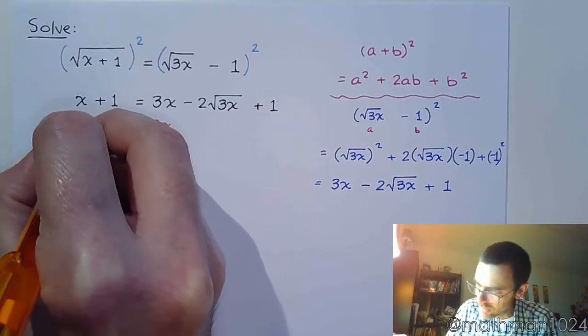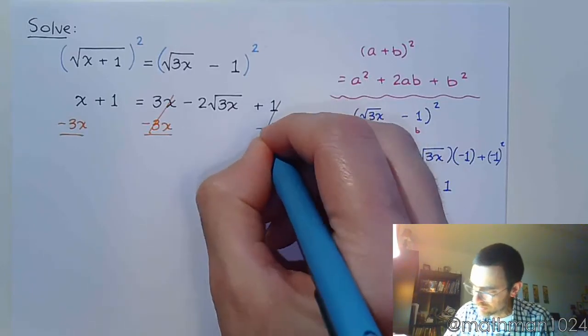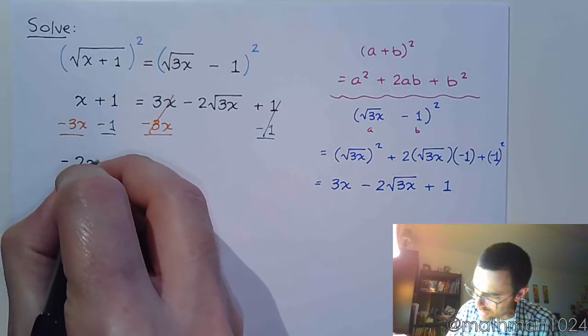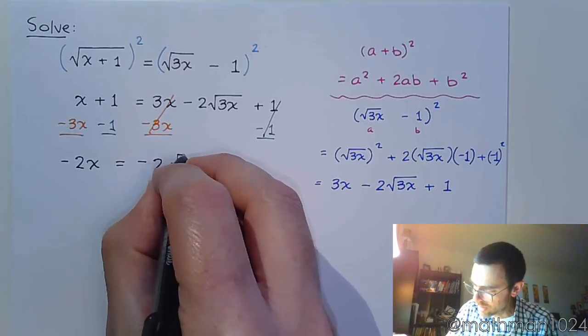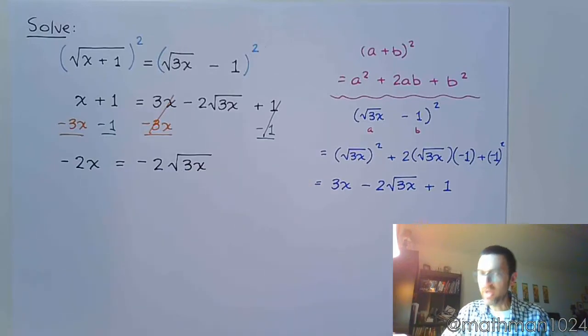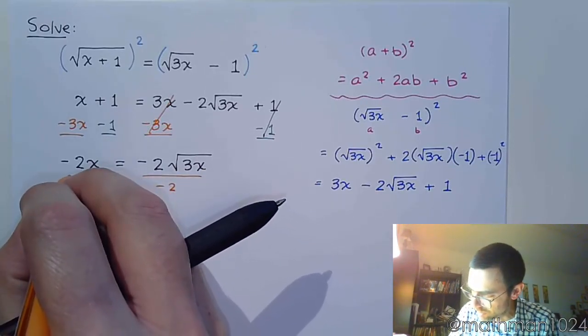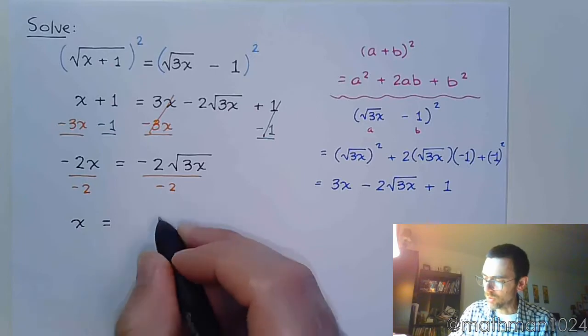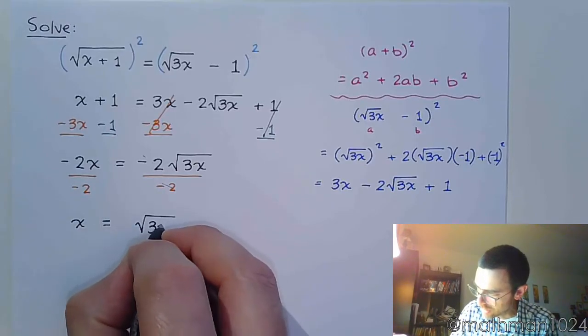So we're going to subtract 3x on both sides like this, and we're going to subtract 1 on both sides. And let's see what we have. x minus 3x is negative 2x, 1 minus 1 is 0 so that guy's gone, equals and I get negative 2 times the square root of 3x. And at this point it's really in our best interest to go ahead and get rid of that negative 2, and so we're going to divide both sides here by that coefficient of negative 2. And so now we have just x equals the square root of 3x.